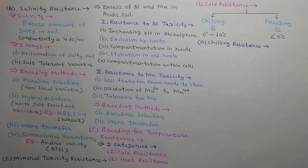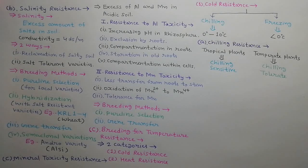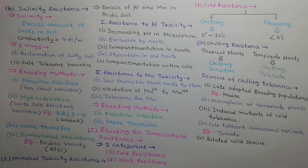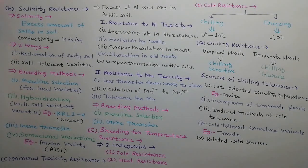Regarding chilling resistance, tropical plants are chilling sensitive while temperate plants are chilling tolerant. Sources of chilling tolerance include late-adapted breeding populations, for example maize; germplasm of temperate plants; induced mutants for cold tolerance; cold tolerance homoeclonal variants, for example tomato; and related wild species.